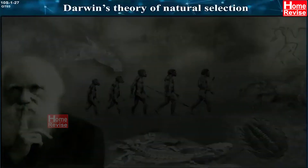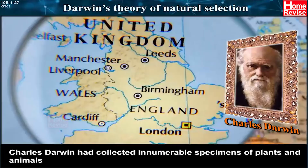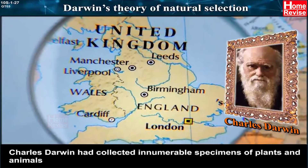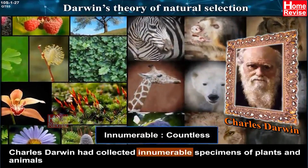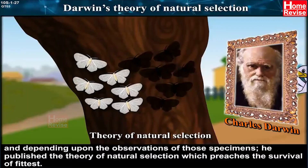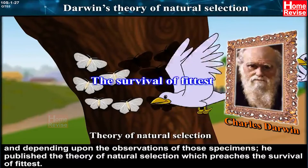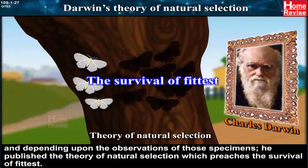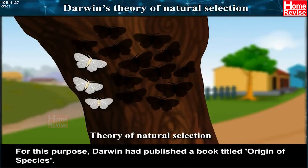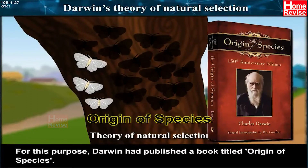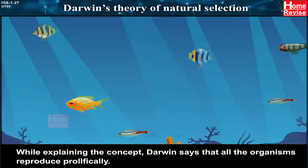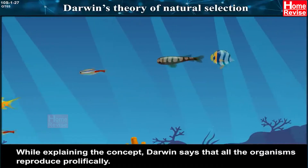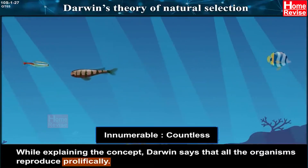Darwin's Theory of Natural Selection. Charles Darwin collected innumerable specimens of plants and animals. Depending upon the observations of those specimens, he published the Theory of Natural Selection, which preaches the survival of the fittest. For this purpose, Darwin published a book titled 'Origin of Species'. Darwin says that all organisms reproduce prolifically — meaning fruitfully — and all organisms compete with each other in a life-threatening manner.